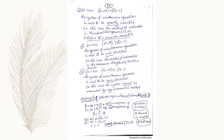There are three possibilities here. In case K minus M is equal to G minus 1, the system of simultaneous equations is said to be exactly identified. In this case, the method of estimation is the indirect least squares, ILS. In case K minus M is greater than G minus 1, the system is said to be overidentified. In this case, the method of estimation is the two-stage least squares, 2SLS. In case K minus M is less than G minus 1, the system is said to be underidentified. In this case, the system cannot be estimated by any econometric method.